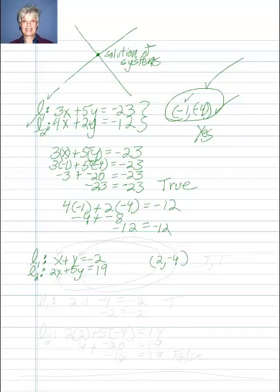...2, and put it in for the x in both equations. And I take the y coordinate, negative 4, and I substitute it for the y in both equations. And if 2 comma negative 4 is the solution, I'll get a true and a true answer. Let's see.